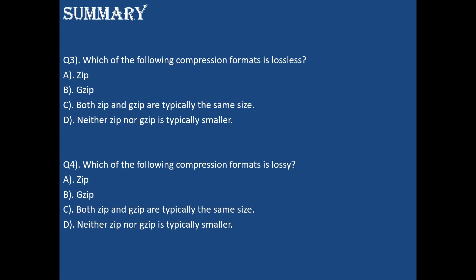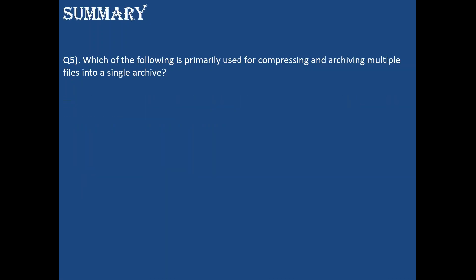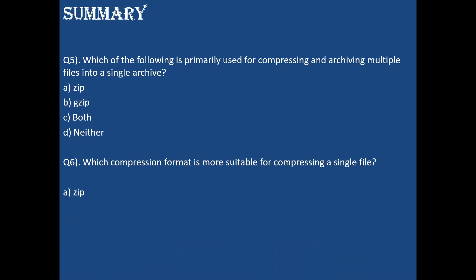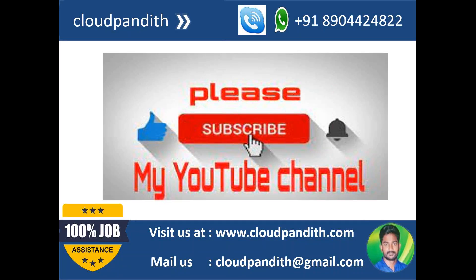Answer for question 3 is B, answer for question 4 is A. Q5: Which format is primarily used for compressing and archiving multiple files into a single file? zip. Q6: Which compression format is more suitable for compressing a single file? gzip, because gzip compresses a single file, whereas zip compresses multiple files. Please subscribe and support me to do more videos. Thank you for watching.